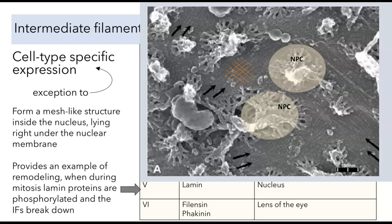This also provides an example of remodeling, because every time a cell goes through mitosis, it needs to break down the nuclear envelope and then reform it in the two daughter cells, which involves breaking down intermediate filaments. What happens is the lamin proteins are phosphorylated, which causes them to depolymerize, allowing the cell to reconstruct the intermediate filament cytoskeleton after separating the chromosomes.